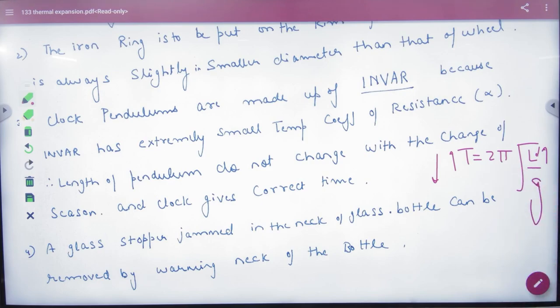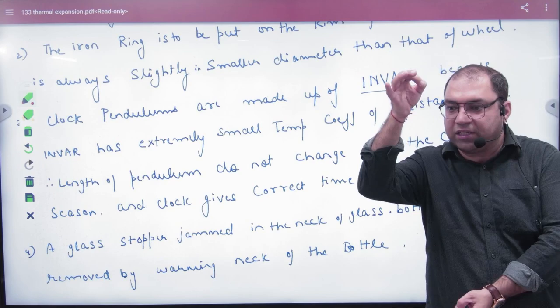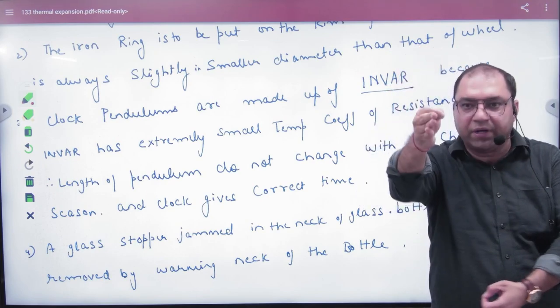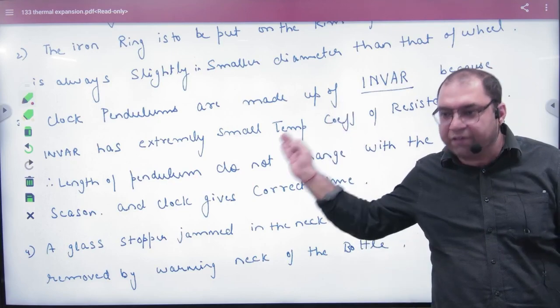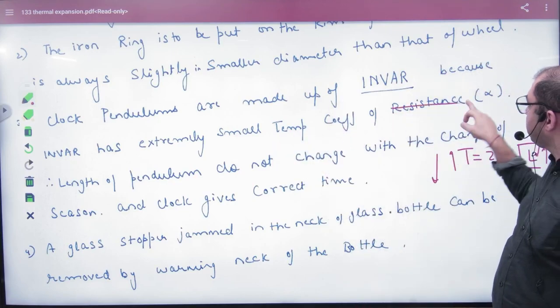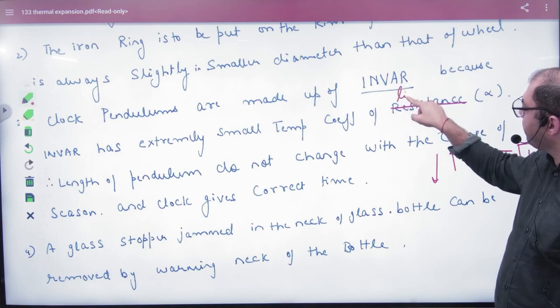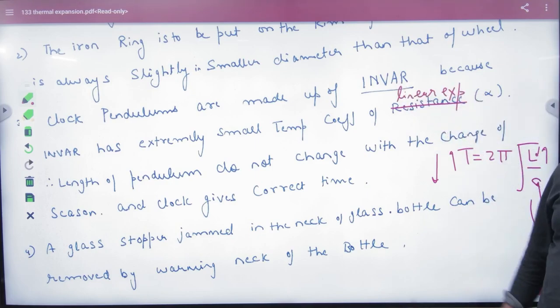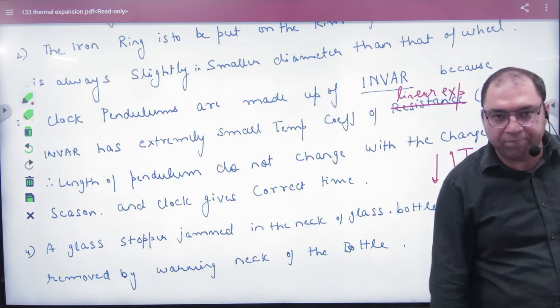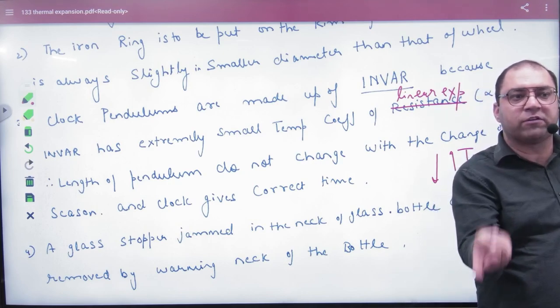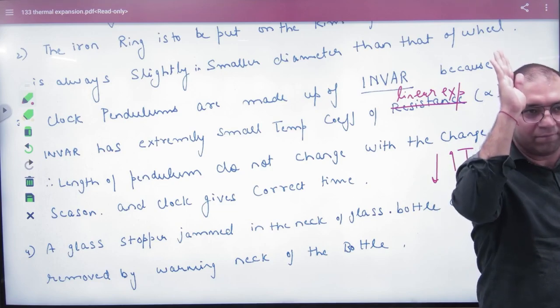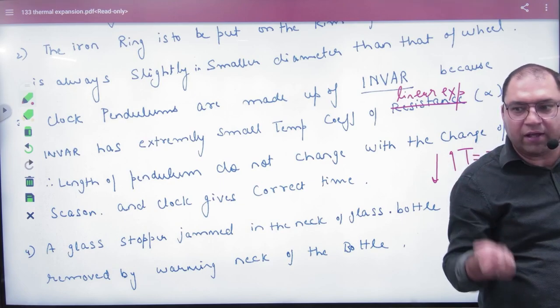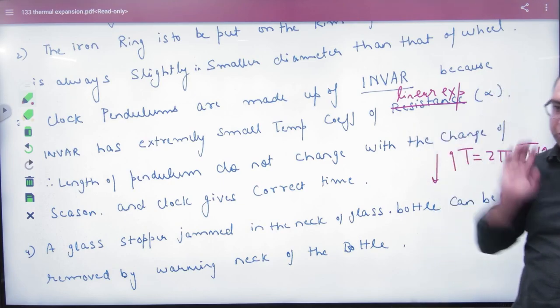So you use materials which expand minimally with temperature. That special material is called Invar. Invar has an extremely small coefficient of linear expansion - alpha is very small. Because alpha is small, Invar will not expand or contract significantly with temperature changes. That's why we use Invar for pendulums.